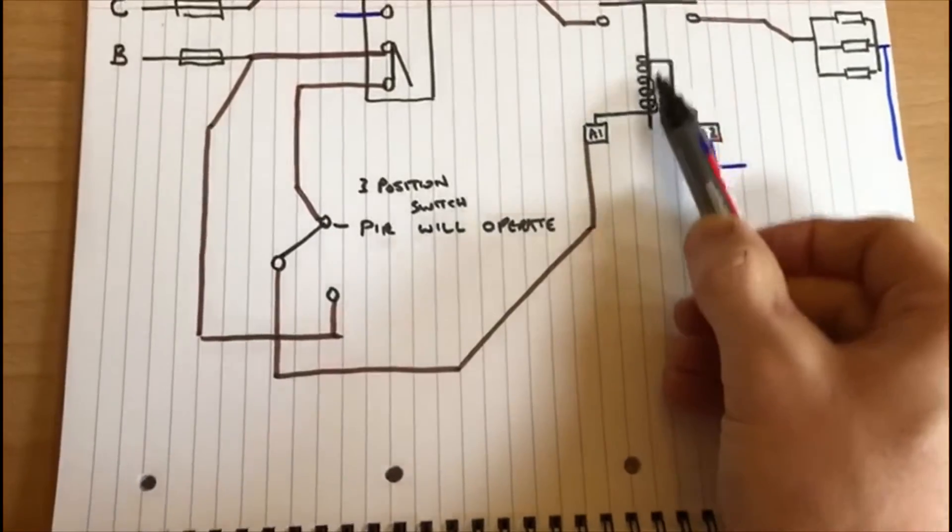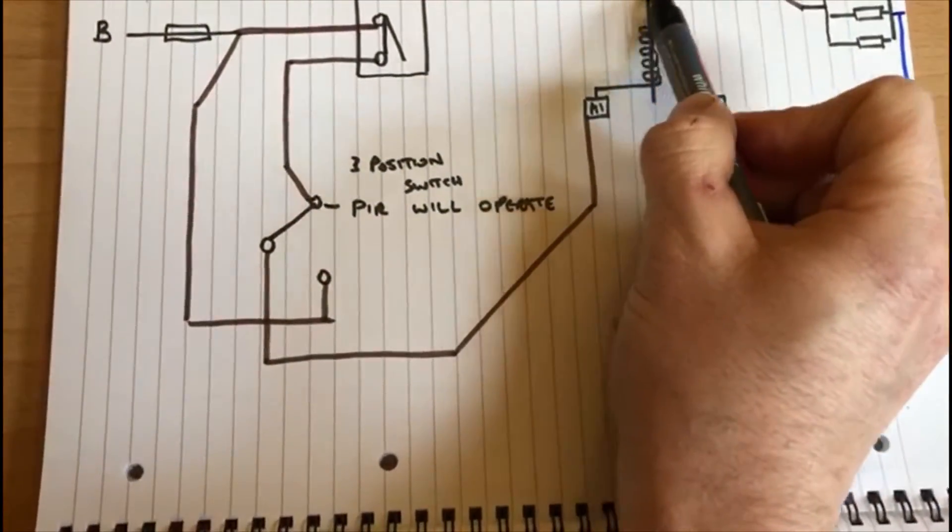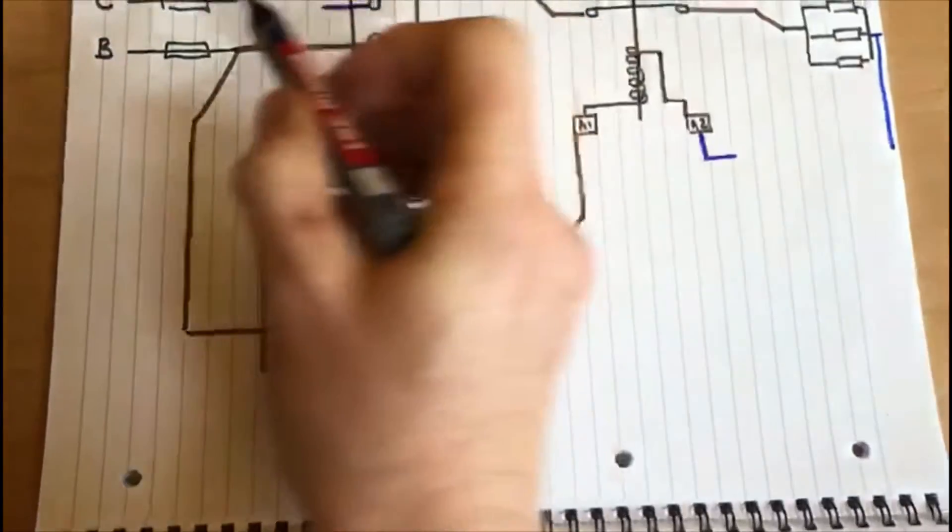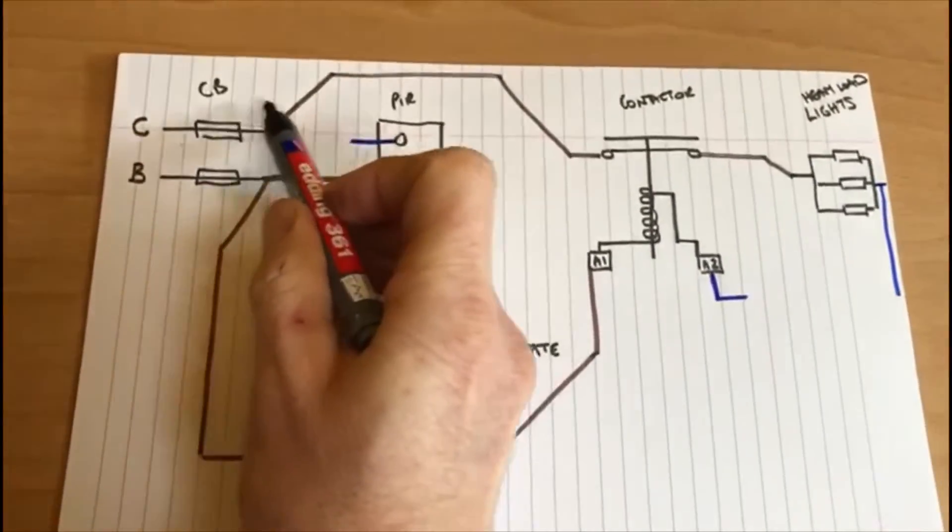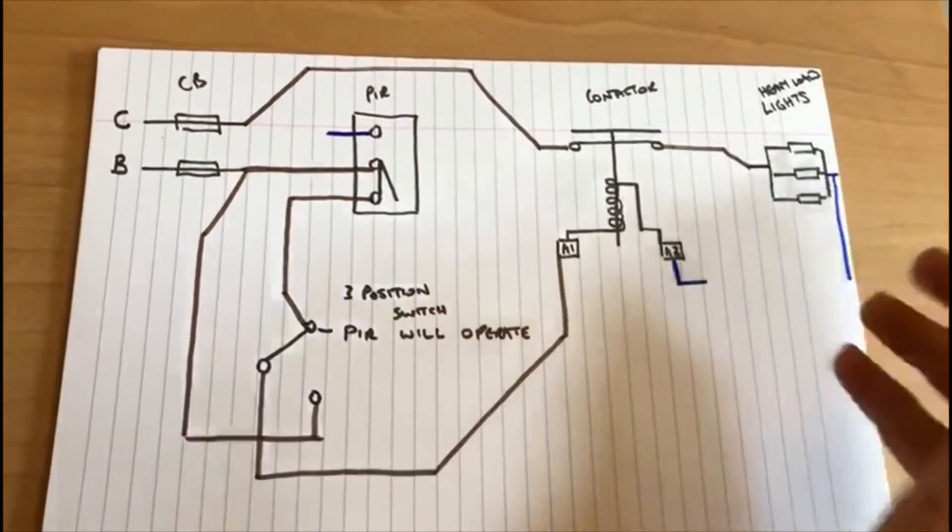Pulls the coil down and then it will go through the contactor and that then brings the other circuit coming through and the lights will turn on.